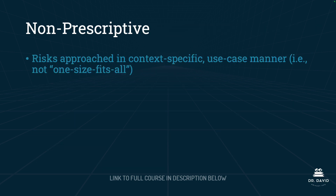Being non-prescriptive means that risks are being approached in a context-specific use case manner, meaning that there is not one approach or one way of handling risk. You're going to want to tailor your risk mitigations and controls for the particular systems that your organization has.